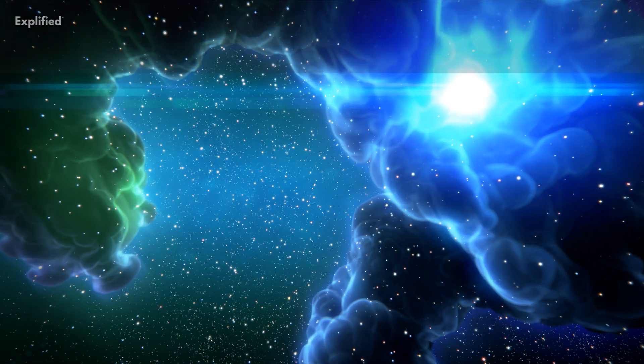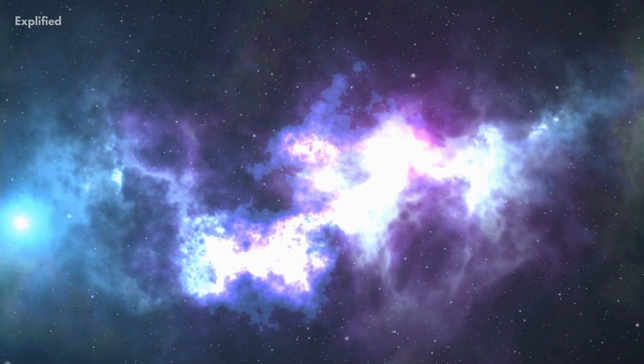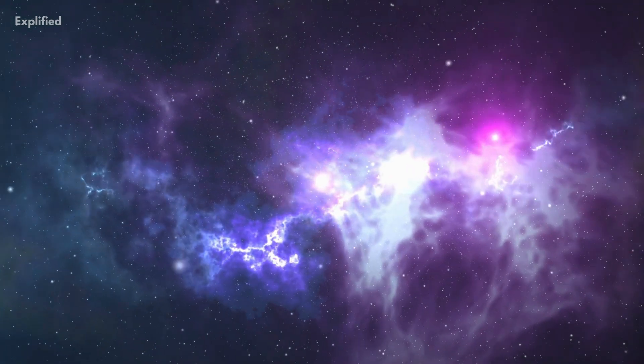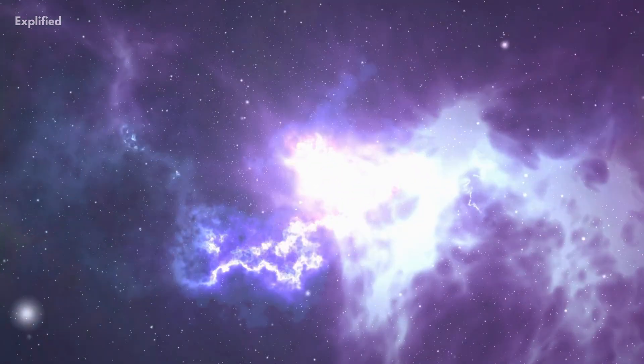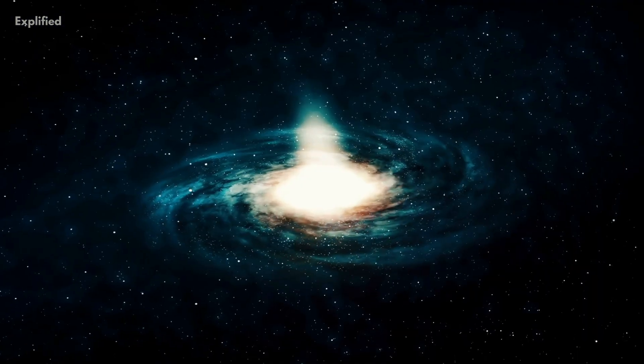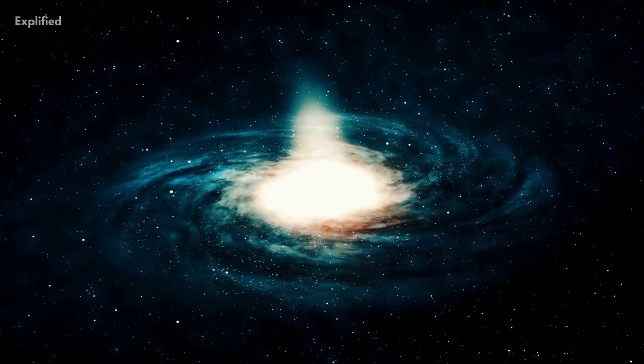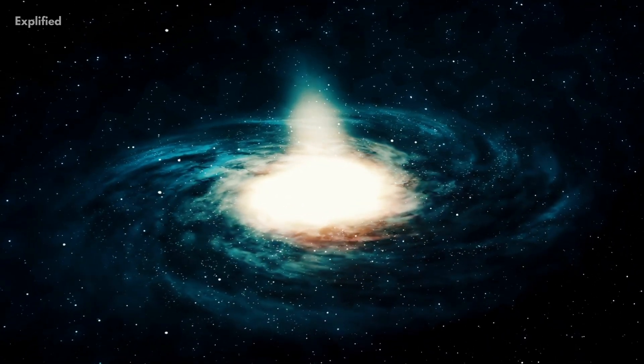While most other nebulae are made up of hydrogen and helium, these planetary nebulae contain heavier elements like oxygen and carbon made from the fusion reaction in the dying star. As the white dwarf star in the center energizes the different elements of the nebulae, they give off glows of different colors. Hence why the planetary nebulae are vibrantly colorful.